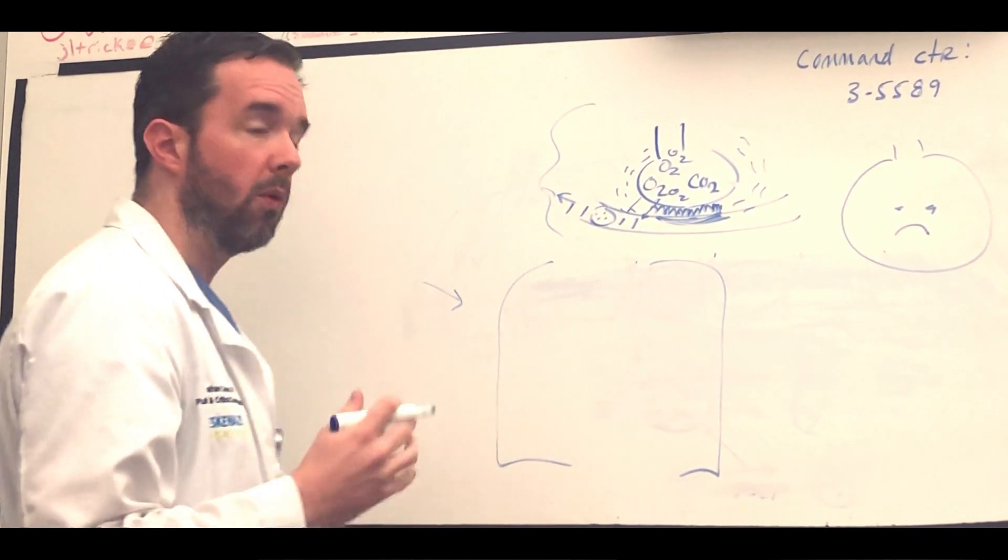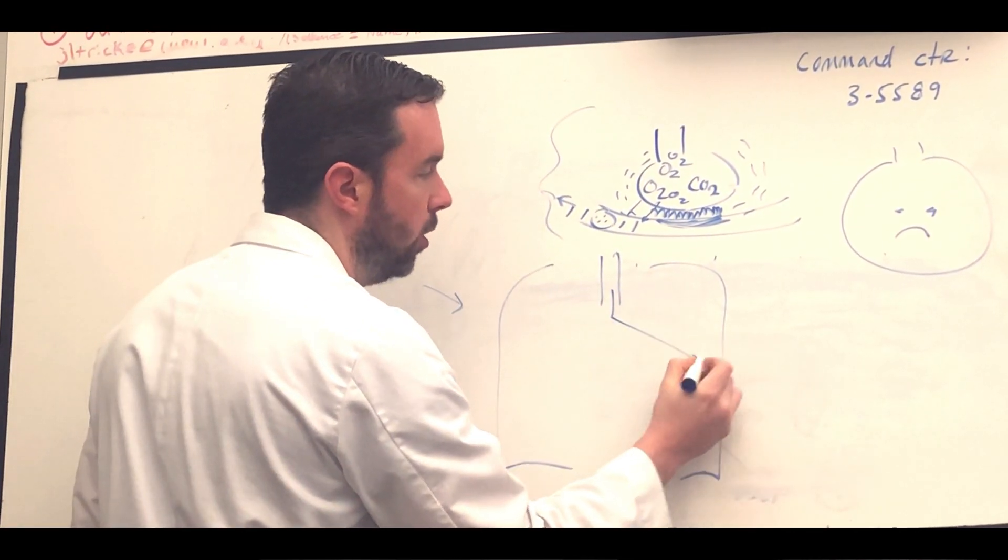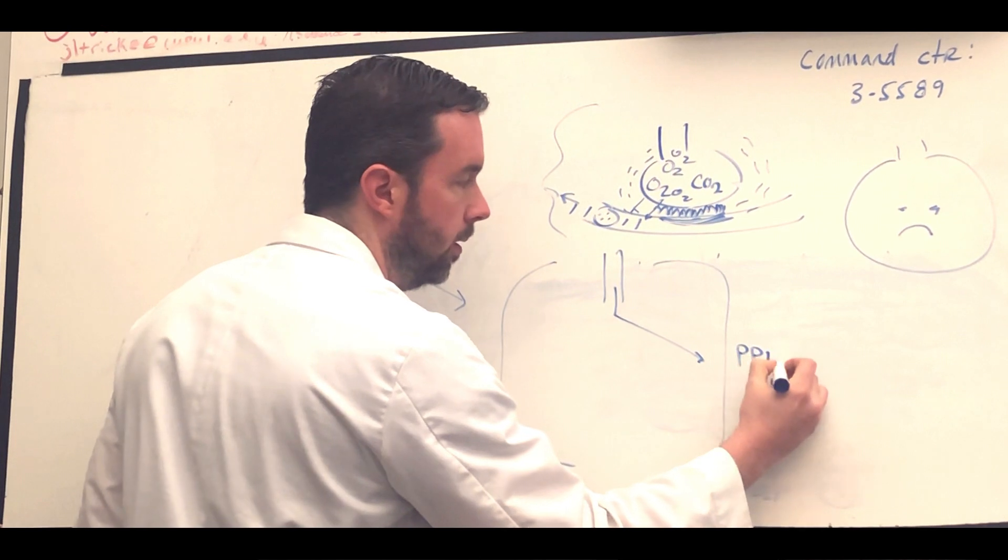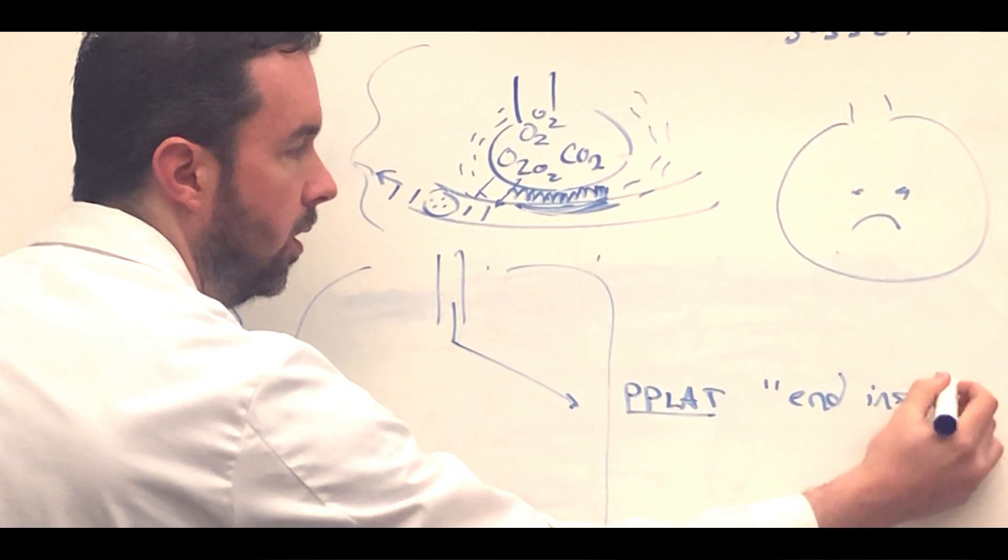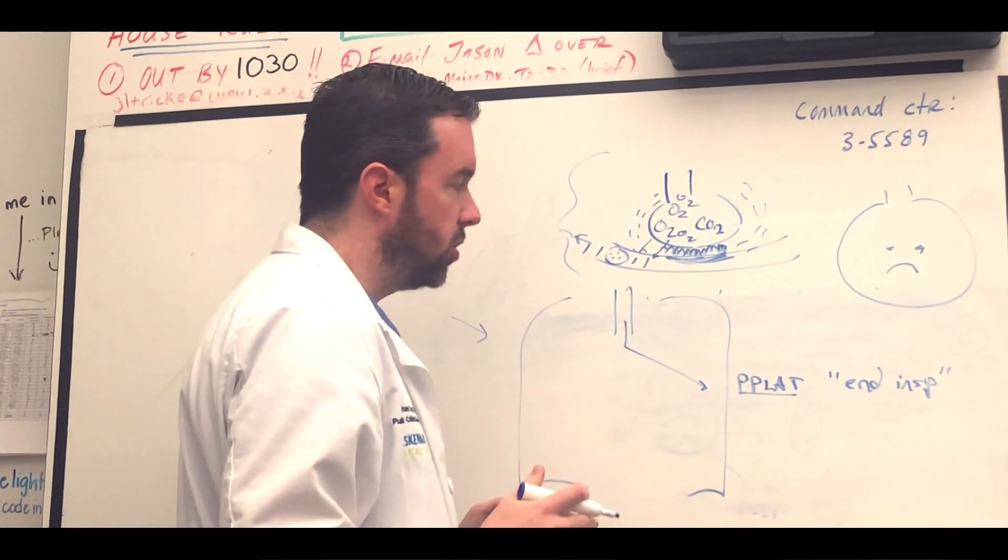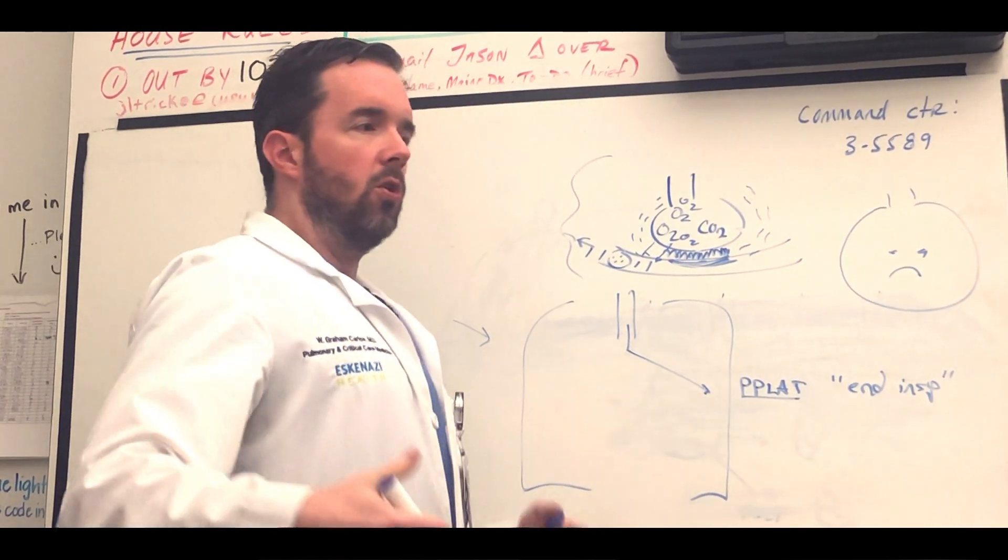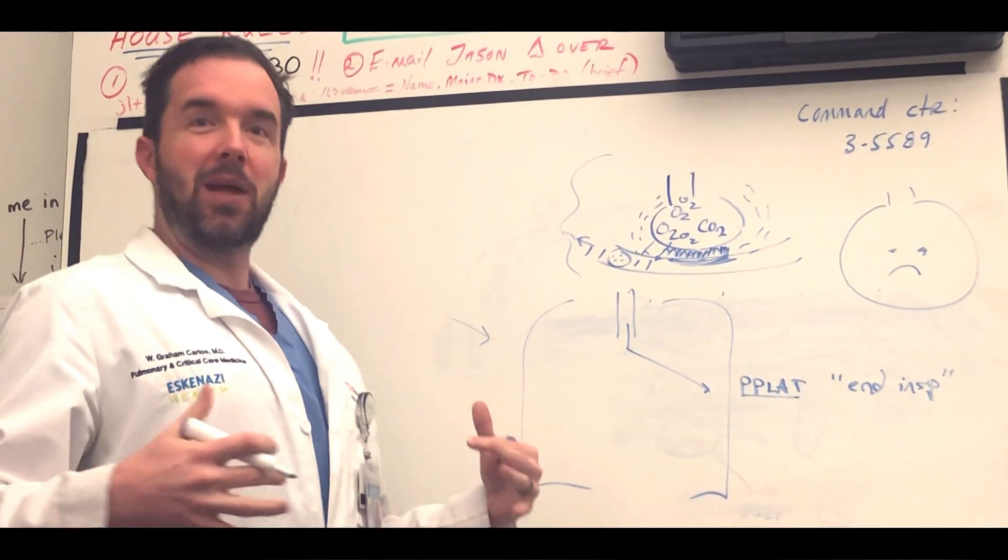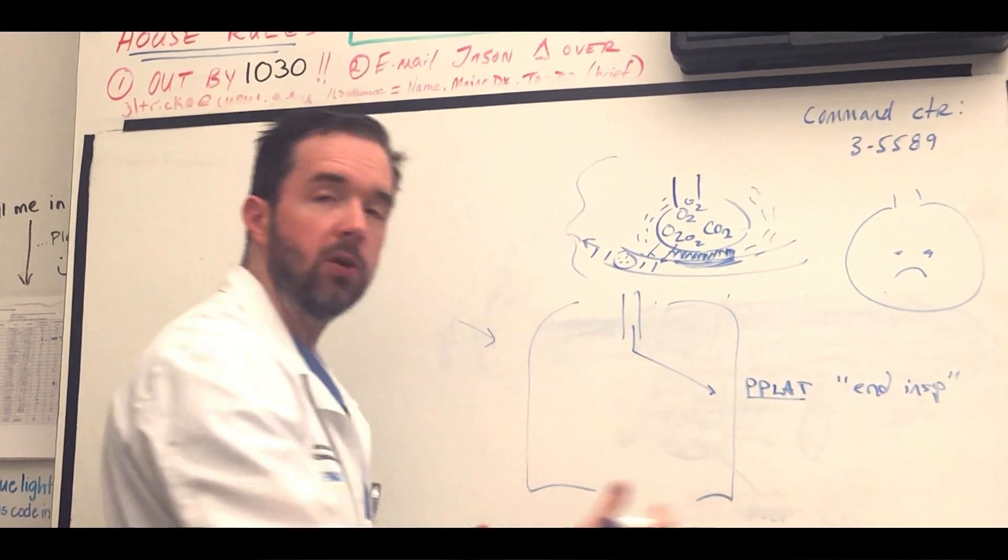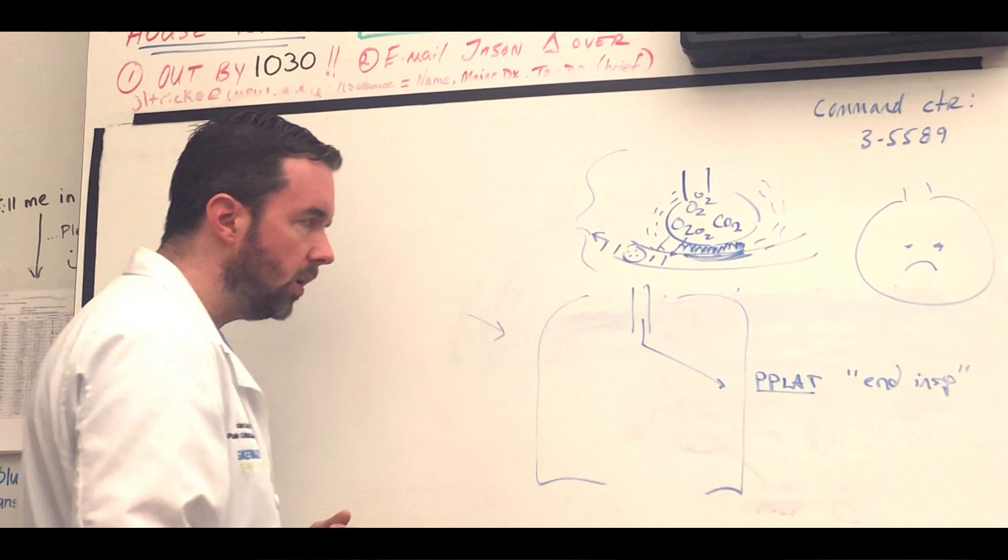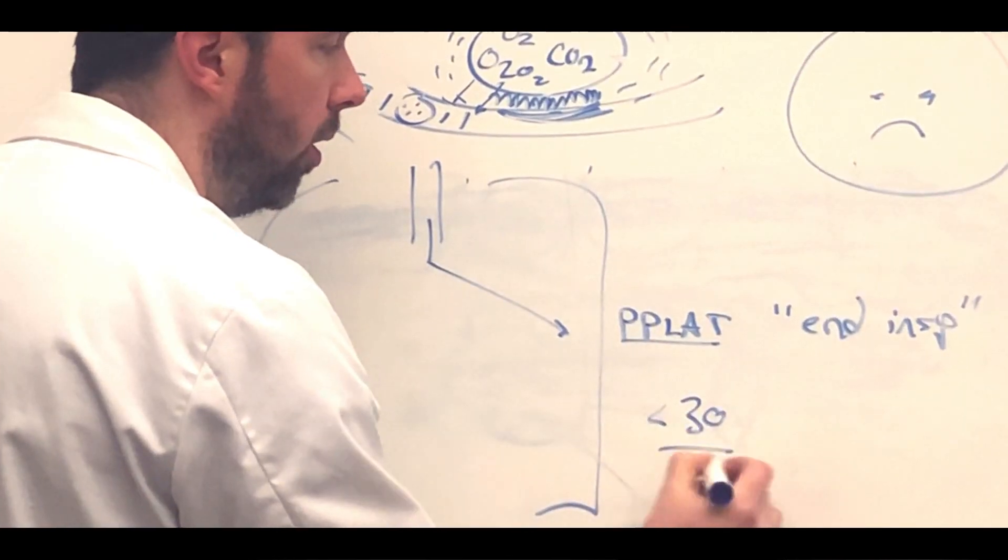One of the key numbers we look for when we're ventilating patients is something called the plateau pressure or P-plat. P-plat is the end inspiratory pressure. This is the pressure at the end of inhalation when the lungs are full. If you all take a breath in right now and hold it, that's kind of your plateau pressure. It's a measure of the compliance of the lungs, the stretchability of the lungs. Typically our goal is to keep P-plat pressures less than about 30. We're happy with that.